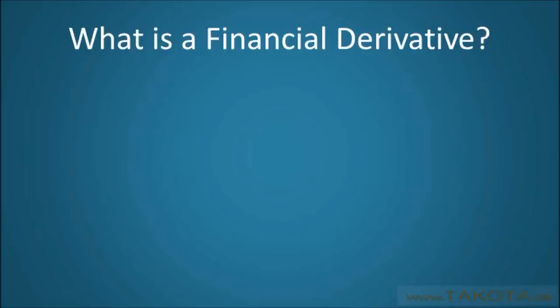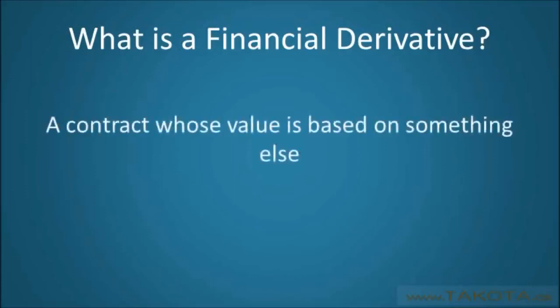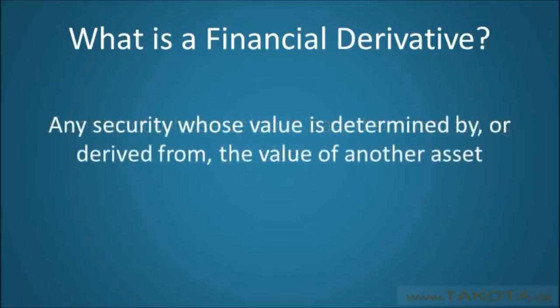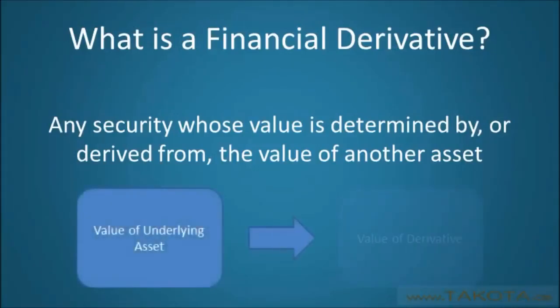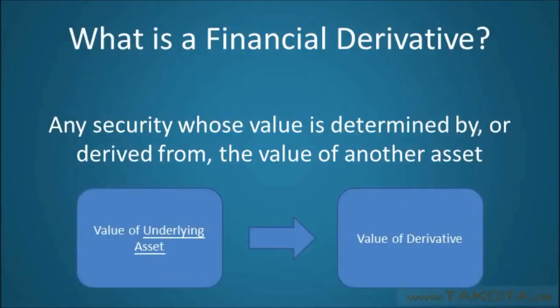But what exactly is a financial derivative? Well, in its most general sense, a derivative is a contract whose value is based on something else. More specifically, the term financial derivative refers to any security whose value is determined by, or derived from, the value of another asset. The asset from which a derivative gets its value is known as the underlying asset, or simply underlying.